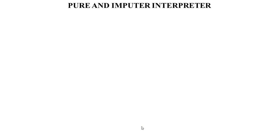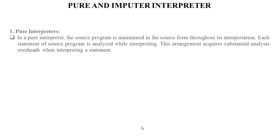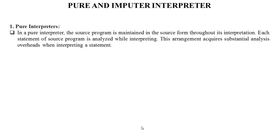Next is pure and impure interpreters. In a pure interpreter, the source program is maintained in source form throughout its interpretation. Each statement of the source program is analyzed while interpreting. These arrangements require substantial analysis overhead when interpreting a statement.